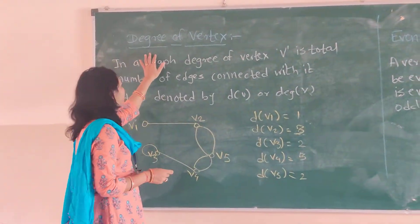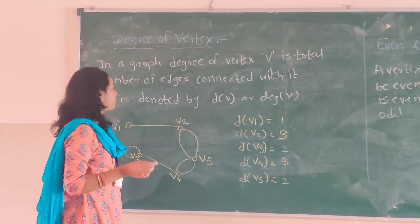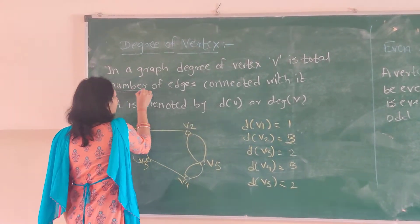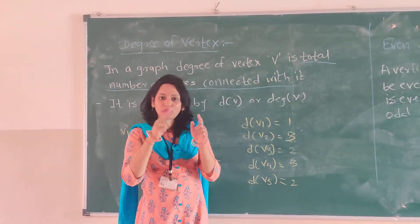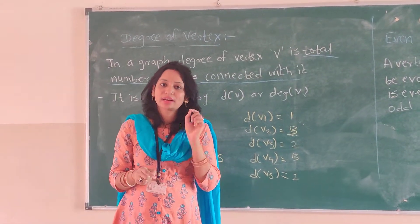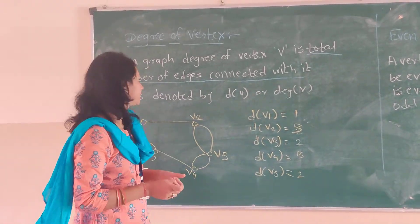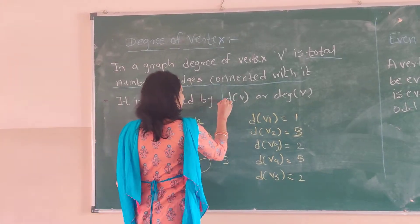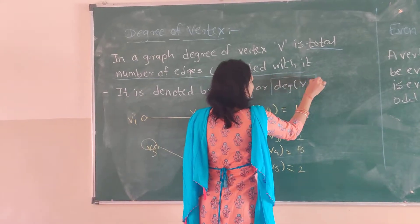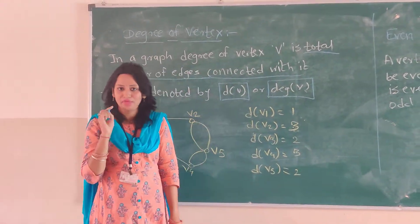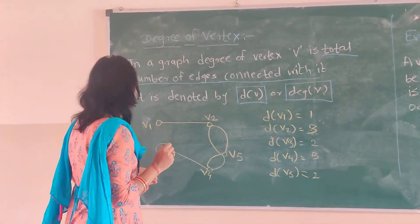What is degree of vertex? The degree of vertex V is the total number of edges connected with V. The total number of edges connected to that particular vertex is the degree of that vertex, and it is denoted by either d(V) or deg(V). We will see how the degree is calculated through an example.